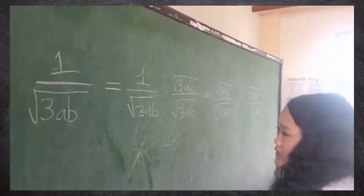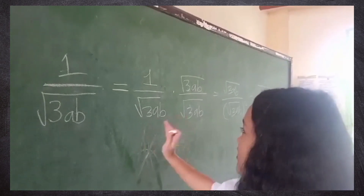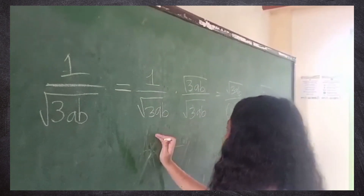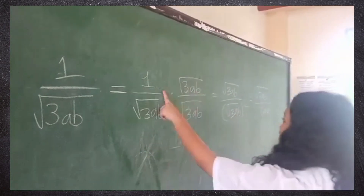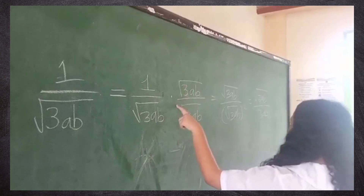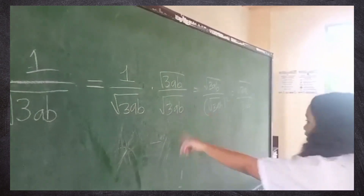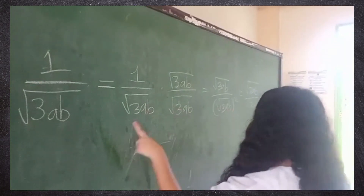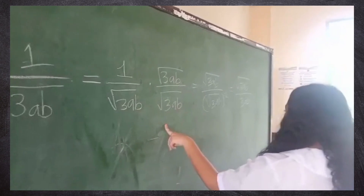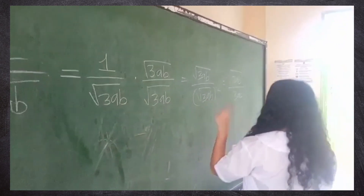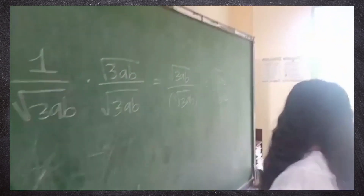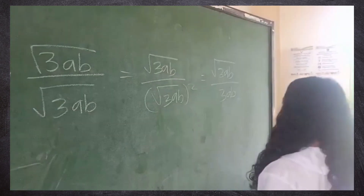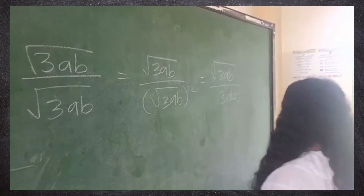For 1 over square root of 3ab, we multiply it by its denominator. 1 times square root of 3ab equals square root of 3ab; square root of 3ab times square root of 3ab equals 3ab. The final answer is square root of 3ab over 3ab.